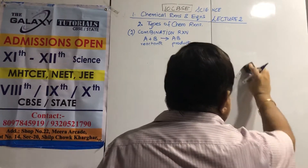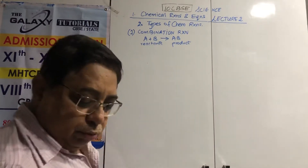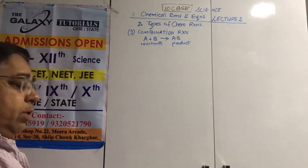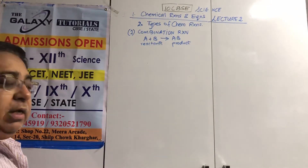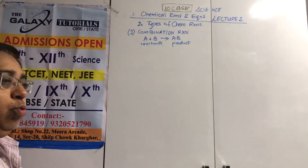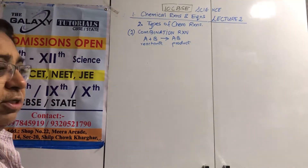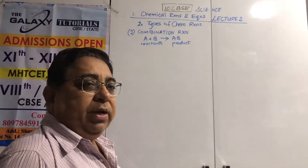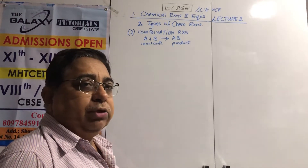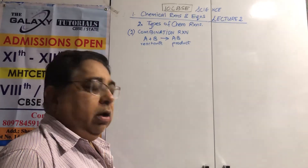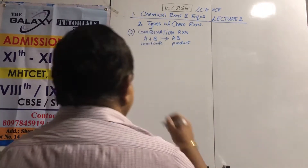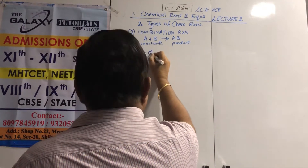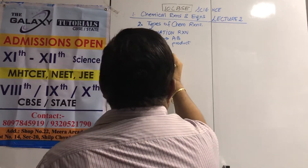Balance each and every equation as it comes so it becomes easy in the end. Now, respiration: we take in air and glucose is burned in the cells. CO2 and water are given out and we get energy stored as ATP in our body. The equation of respiration is C6H12O6 plus 6O2.